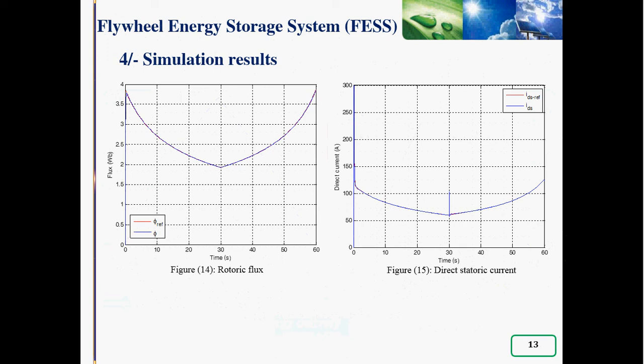Figure 14 and 15 show the evolution of the rotor flux and the direct current of the asynchronous machine. There is good instruction following. As a second observation we can draw from these figures, the change in the direct current component to the current, which is the image of the flux.